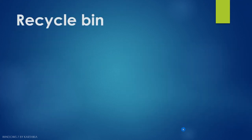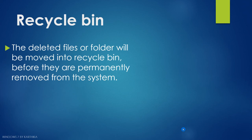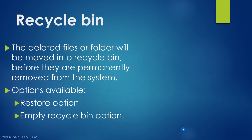The last topic is recycle bin. Recycle bin is used to store deleted files. When you delete a file from a system, you are just moving it from its folder to the recycle bin — it does not get deleted permanently. The files and folders inside the recycle bin can be retrieved whenever you want. There are two options inside the recycle bin: the restore option and the empty recycle bin option.